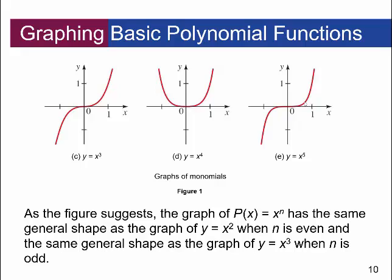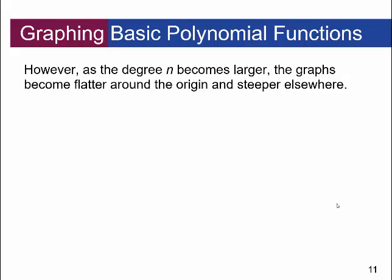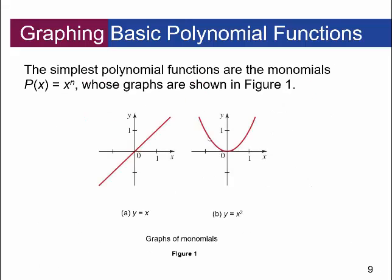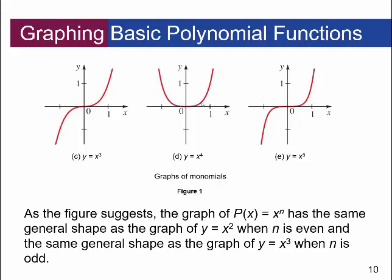This pattern continues. As the figure suggests, the graph of p of x equals x to the n has the same general shape as y equals x squared when n is even — so x to the 6th, 8th, 10th would look similar. And the same general shape as y equals x cubed when n is odd — so x to the 7th would look like that too. When the degree is even it looks like a u; when it's odd it looks like a cubic. As n becomes larger, the graphs become flatter around the origin and steeper elsewhere.